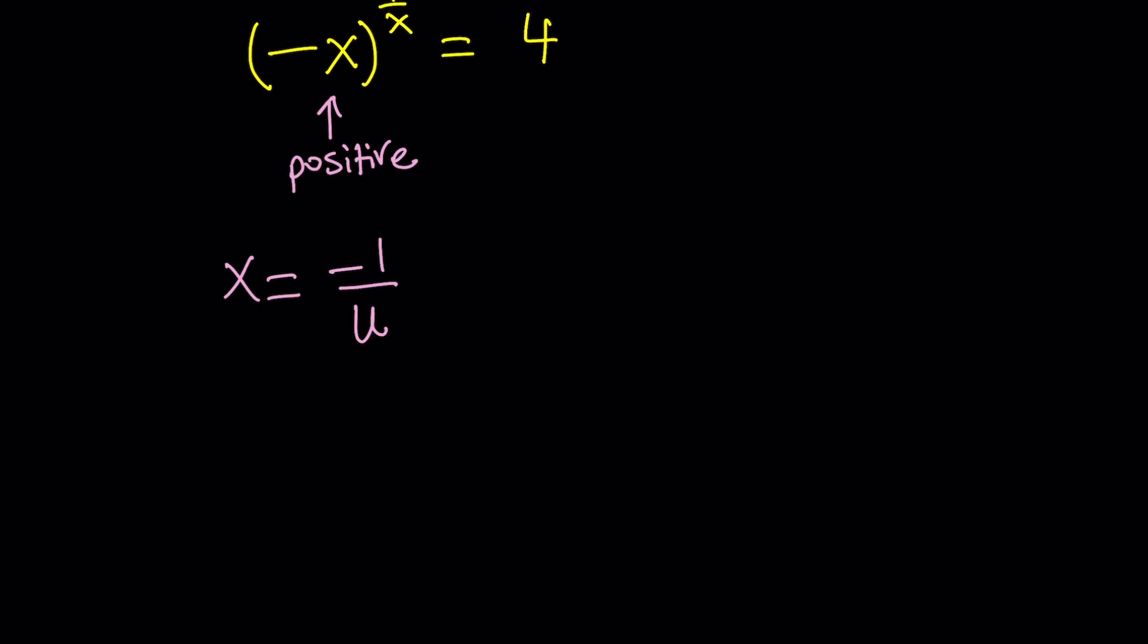I want to go ahead and set x equal to negative 1 over u. You can use another variable, but I just wanted to use u, the letter u. And we know that x is less than 0, right? Because negative x is positive. So, since x is negative, this is negative, which means u is positive. We've got a positive quantity.